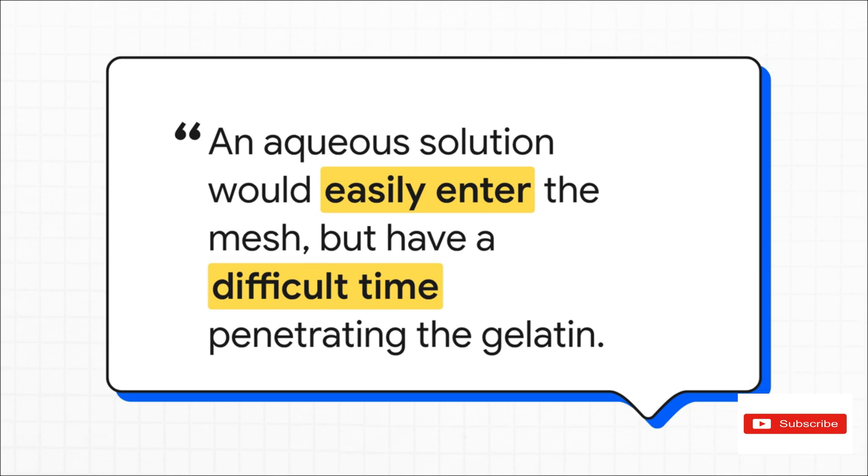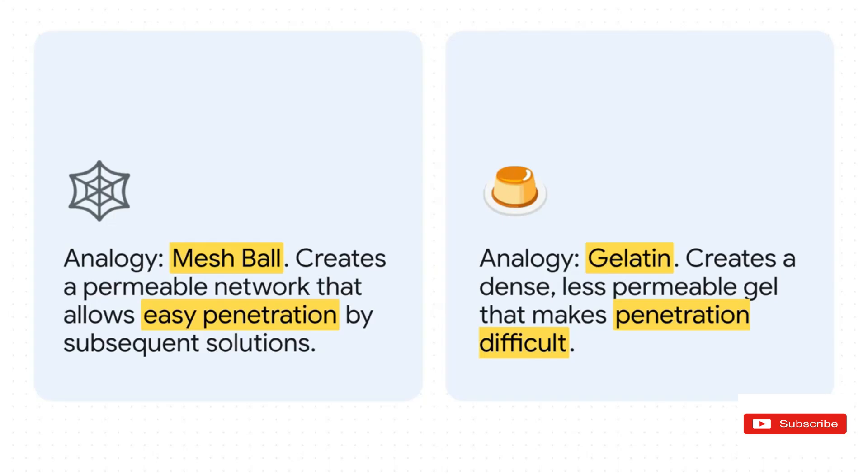These different chemical actions create some pretty profound physical differences in the tissue, and this brings us to one of the most brilliant analogies in all of histology. Imagine trying to pour water into two different things. One is a porous mesh ball, and the other is a solid block of gelatin. This perfectly illustrates the physical difference between our next two concepts. Coagulant fixatives, like the alcohols, create that mesh ball, a permeable network of proteins that lets later solutions, like dehydrants and paraffin wax, get in super easily. On the other hand, non-coagulant fixatives, like formaldehyde, create the gelatin, a dense gel that makes it much harder for other solutions to penetrate.